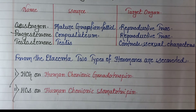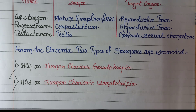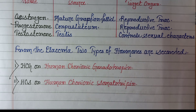During the pregnancy period, from the placenta, basically two types of hormones are secreted. First is HCG, or human chorionic gonadotropin, and next is HCS, or human chorionic somatotropin.